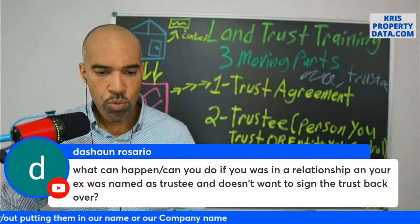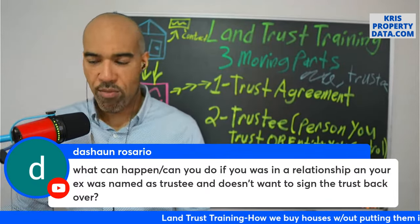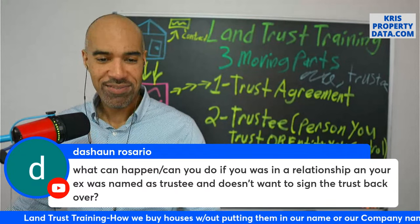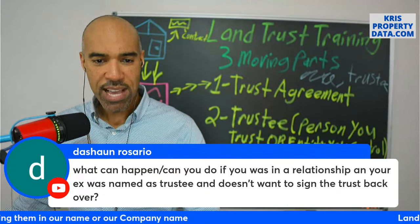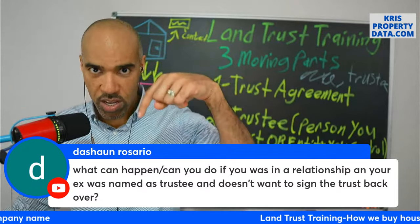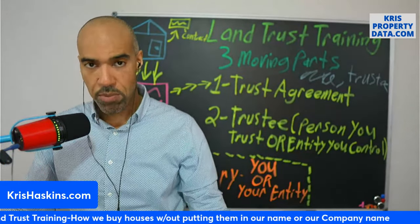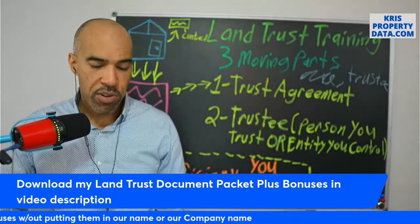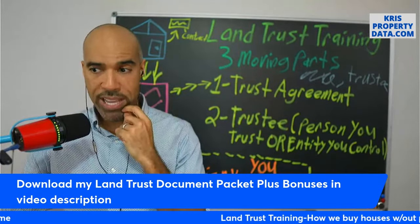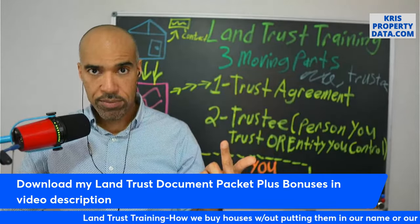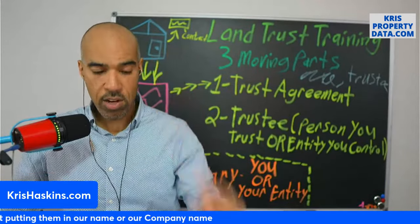Question from Deshaun: What can happen if you were in a relationship and your ex was named as trustee and doesn't want to sign the trust back over? That's what we call a rogue trustee. In that instance, we use our appointment of successor trustee document — that's in your downloads. We wipe her out and place in a new trustee — real simple, one document. Make sure you download your land trust document packet. And don't forget, you're going to get a bonus for $1 — my subject-to lease option training showing you how to buy houses without using your credit.